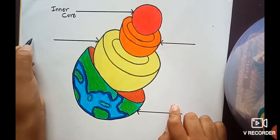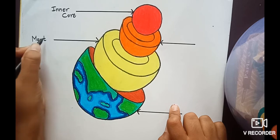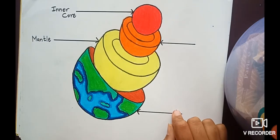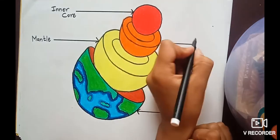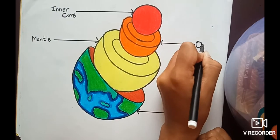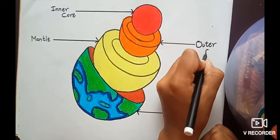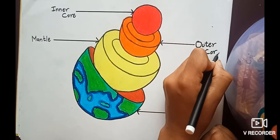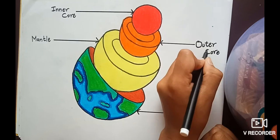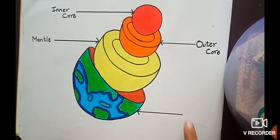Next, the third should be named as mantle, and not mental. Mantle spelling is M-A-N-T-L-E. Outer core: O-U-T-E-R C-O-R-E. The second bowl is outer core.